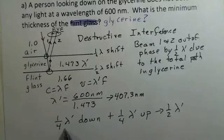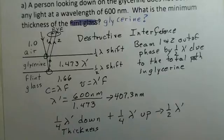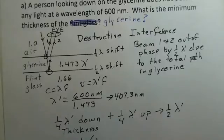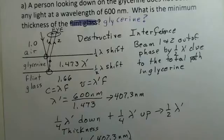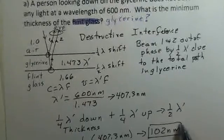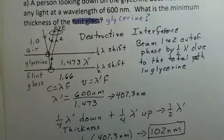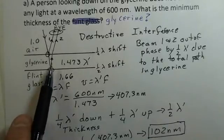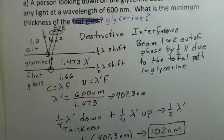We need a thickness of one quarter wavelength going down, and the same thickness back up. So the thickness equals one quarter of our wavelength in the glycerin, which rounds to 102 nanometers. That's the minimum thickness of the glycerin. We're considering only the minimum case — a total path of one half wavelength — not one and a half or two and a half.